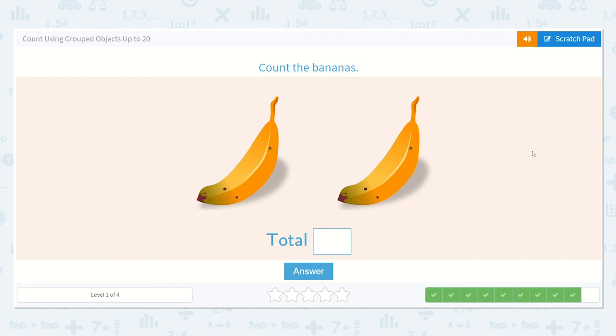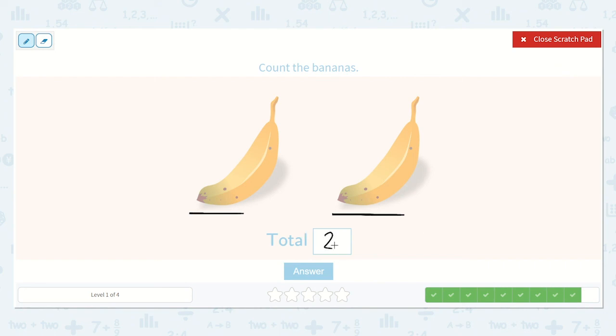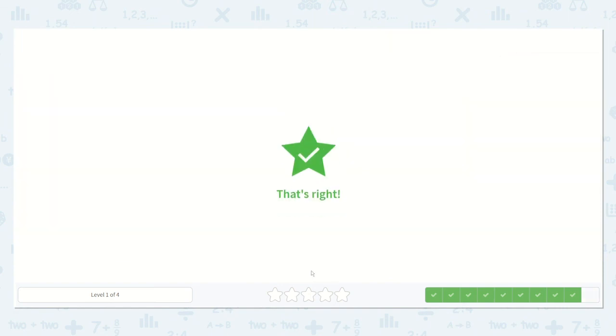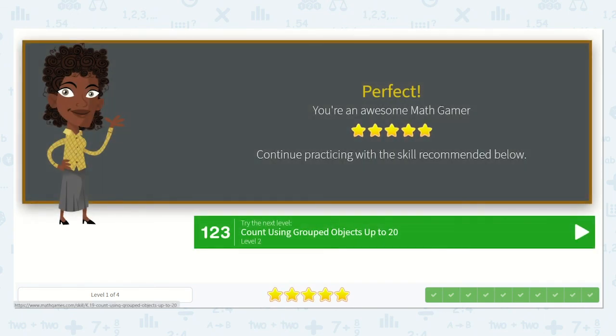This is our last one. How many bananas do you see? Let's count. One, two. I see two bananas. I like to underline as I count so I don't lose track of what I'm counting. Two. Wonderful work, friends.